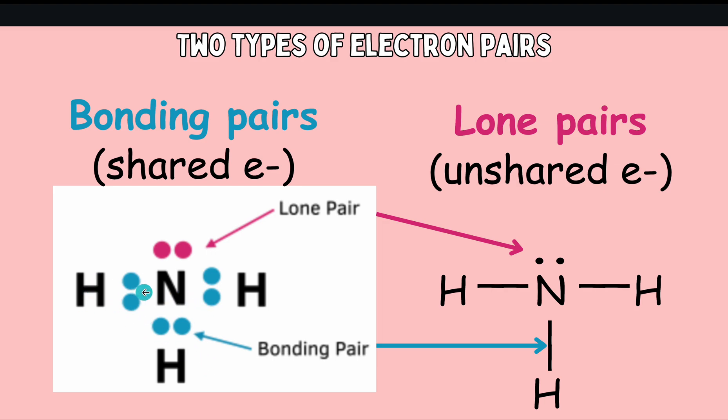Between each of these atoms, the hydrogen and the nitrogen, there is this bonding pair that creates this covalent bond that holds these two electrons together. An electron from hydrogen and electron from nitrogen are being shared to create this covalent bond.